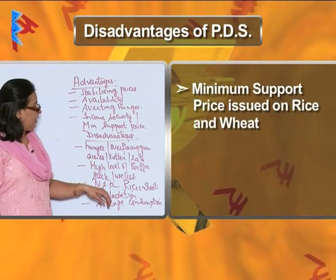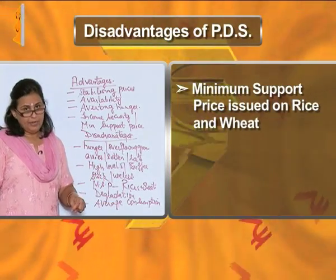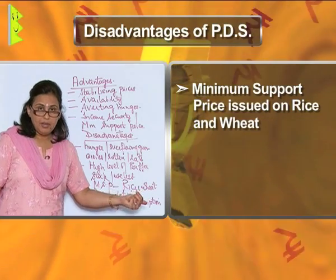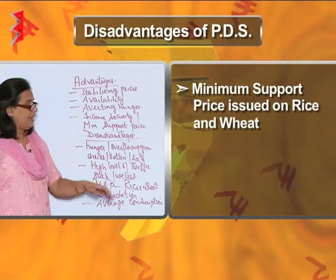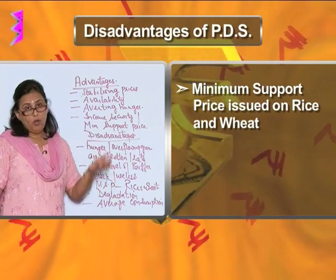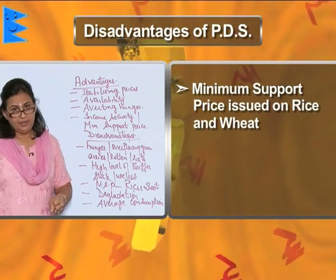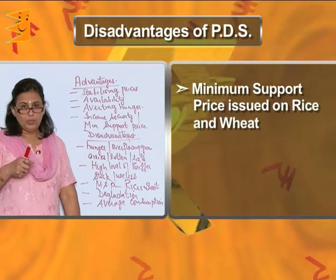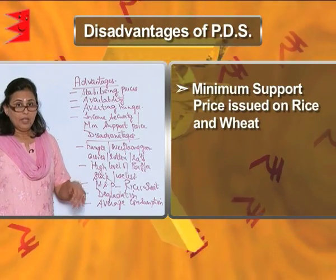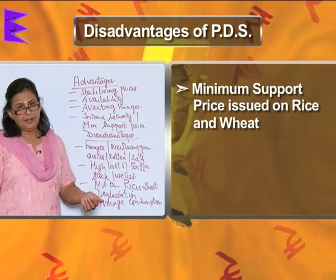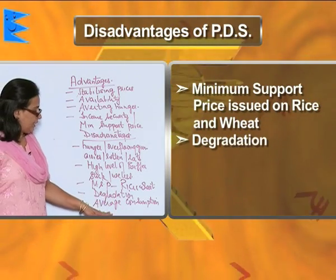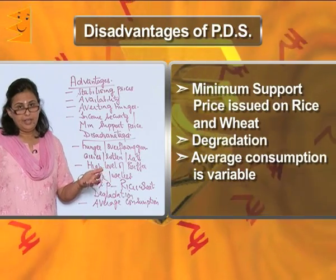When the minimum support price is issued by the government on two food grains — rice and wheat — farmers have stopped producing other grains and are only interested in these two. The profit they are deriving has led farmers to over-utilize the land in a bad manner. Over-utilization of land has led to land degradation.